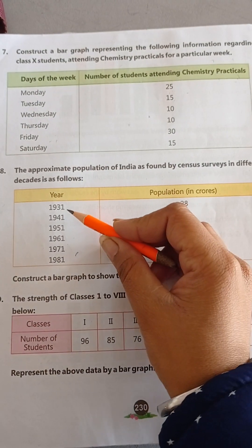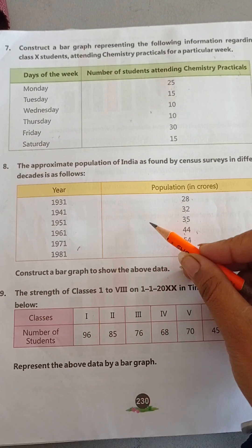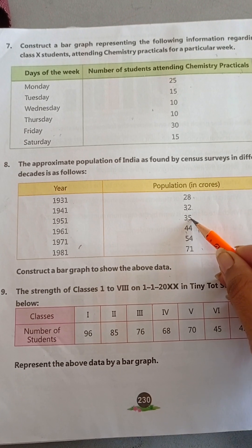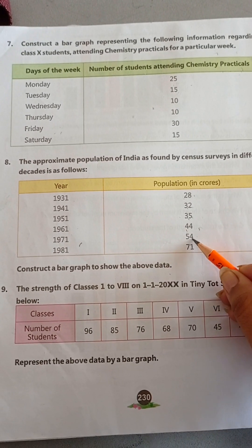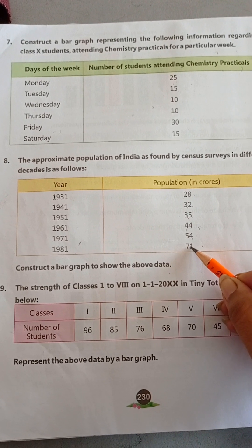First one, in 1931, population in crores is 28. 1941, it is 32 crores. 1951, it is 35 crores. In 1961, it is 44 crores. 1971, 54 crores. In 1981, it is 71 crores.